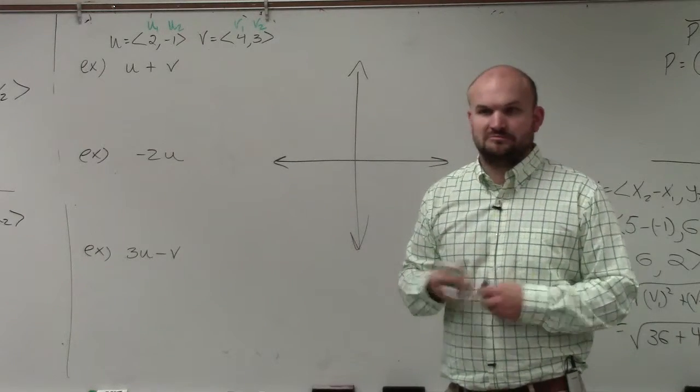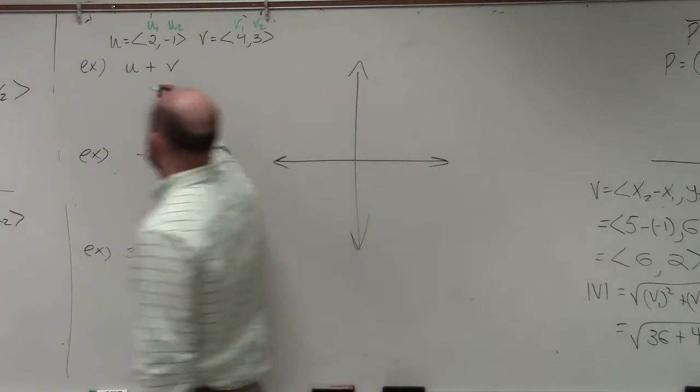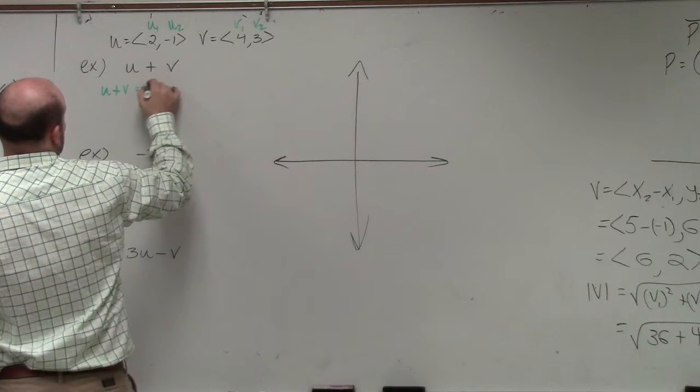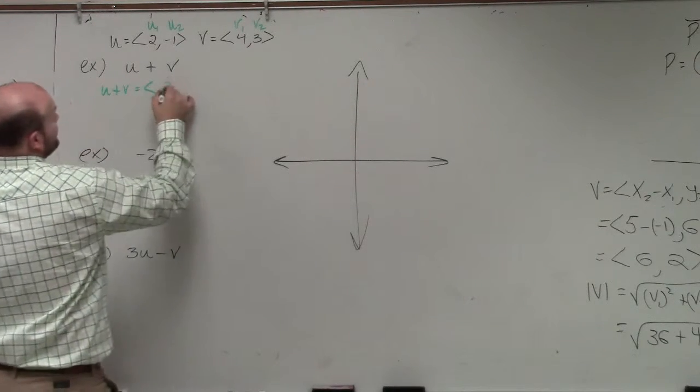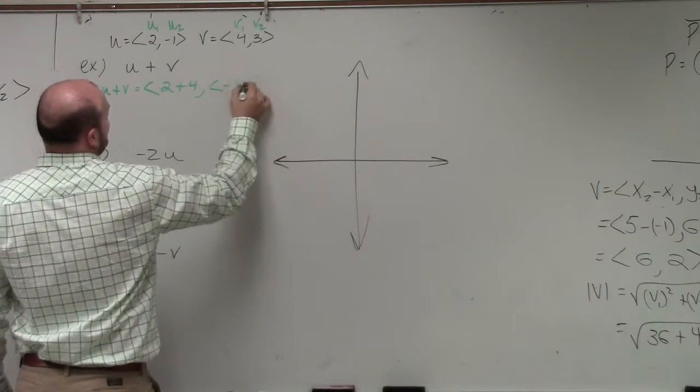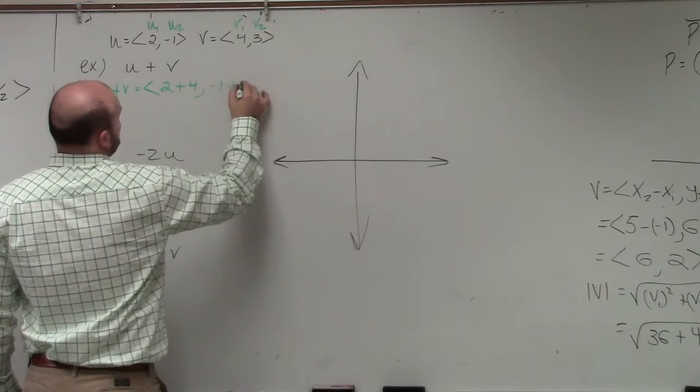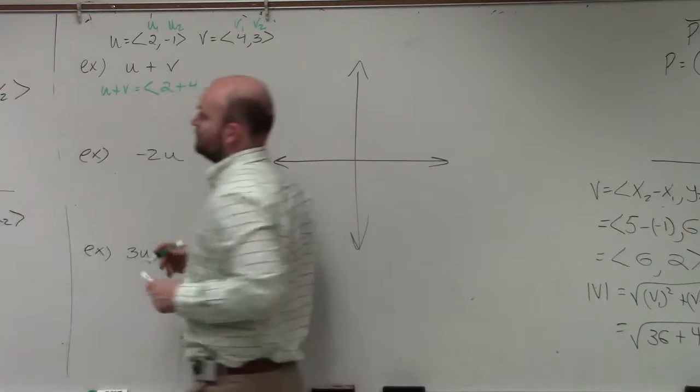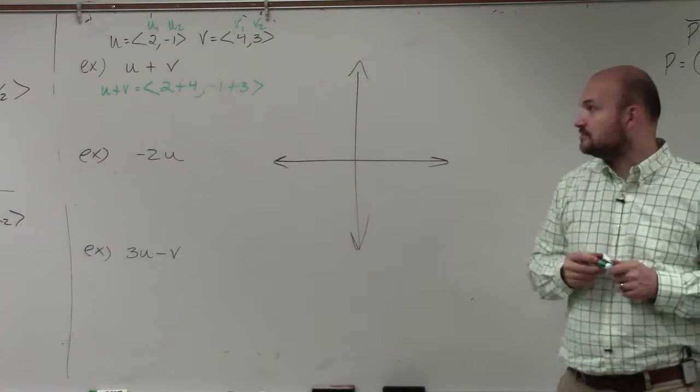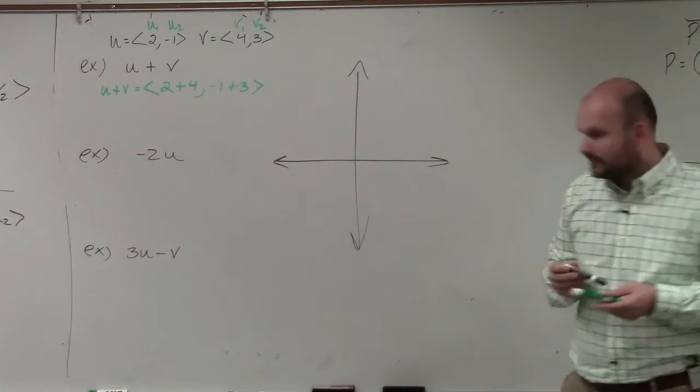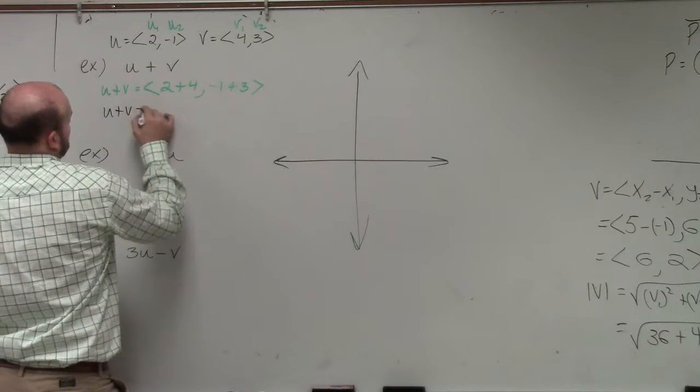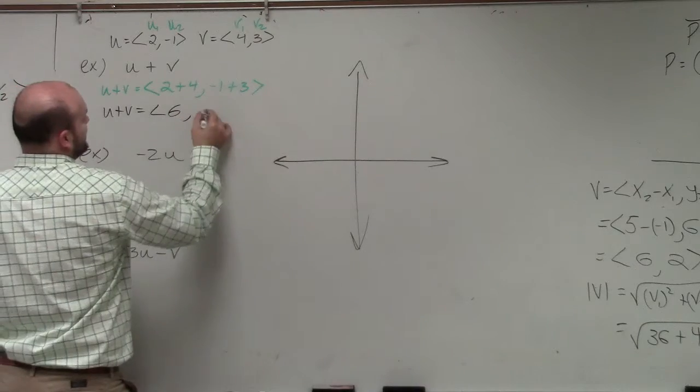Does everybody follow me? So therefore, in vector addition, all I'm simply doing is my new vector u plus v is equal to 2 plus 4 comma negative 1 plus 3, per my formula that I wrote over there. u1 plus v1 and u2 plus v2. Does everybody follow me? So therefore, my u plus v is going to be 6 comma 2.